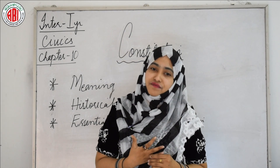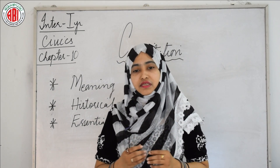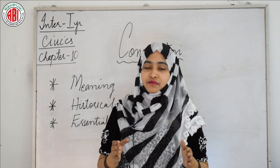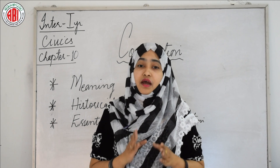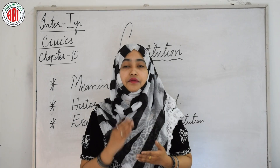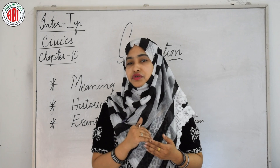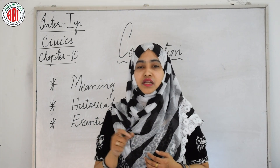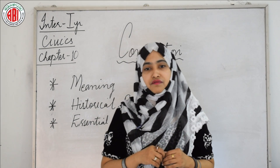Now we will see the classification. Political scientists classify the constitution into two types: the written constitution and the unwritten constitution. Under the written constitution comes the rigid constitution, and under the unwritten constitution comes the flexible constitution.